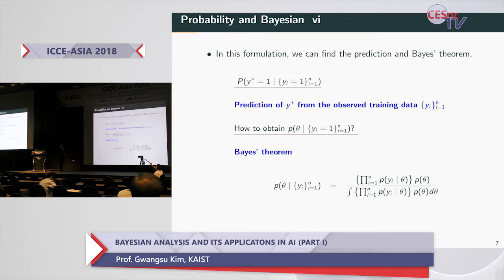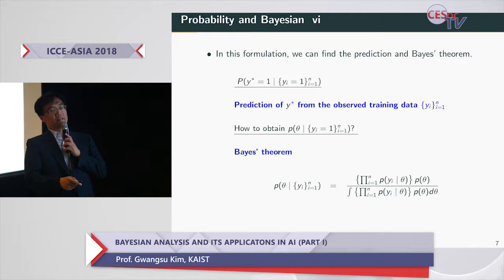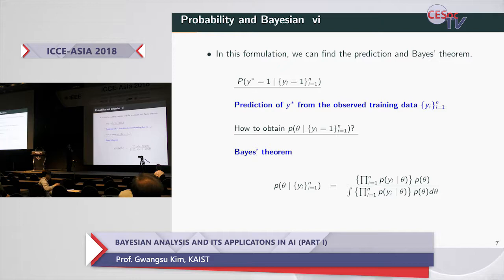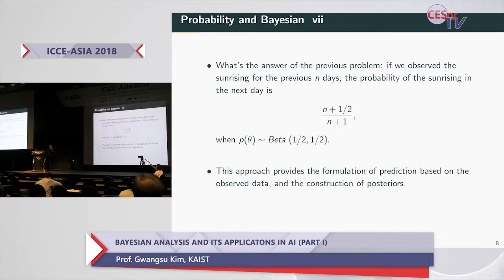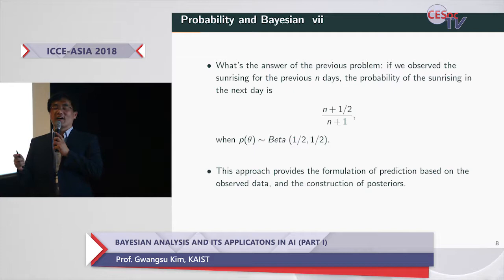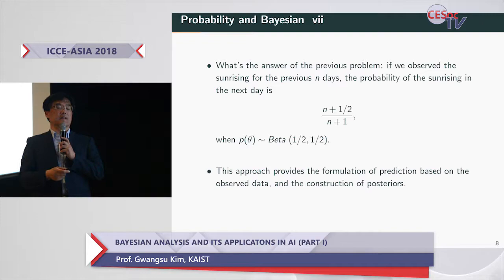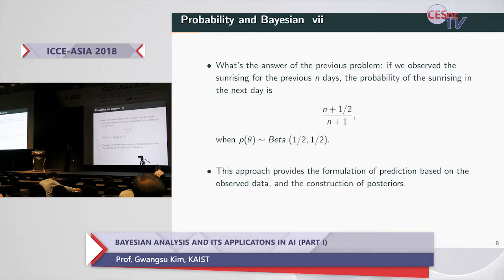To obtain the posterior, we should consider theta as random, because theta follows a prior distribution P. The basic idea essential to Bayesian analysis is to treat theta as random. In my tutorial, I skip some rigorous formulations. I want to explain the basic concept and what Bayesian analysis does.